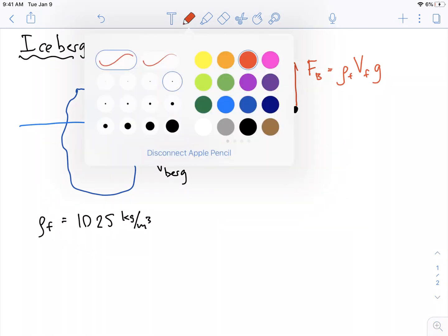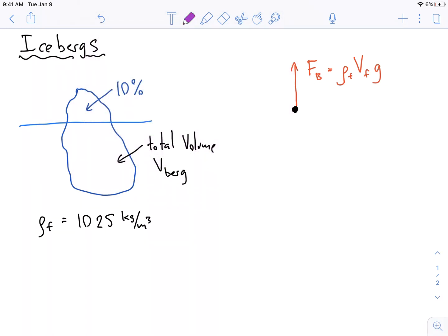And then there's this other force. Let me get purple, which is the force of gravity, right. Fg is equal to the mass of the berg times g.